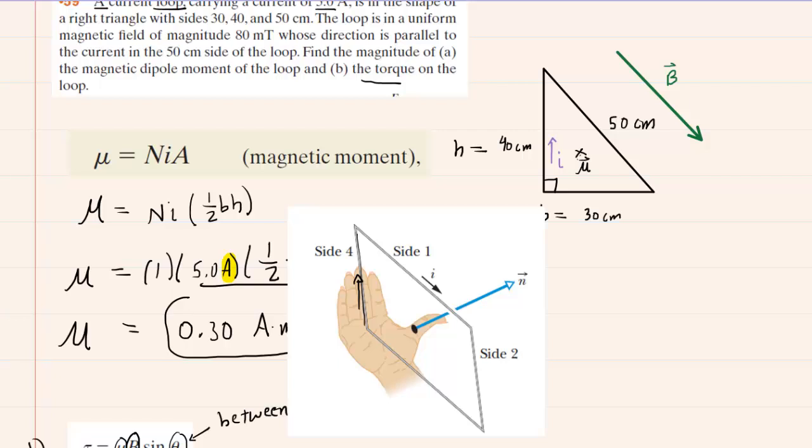The magnetic field direction was given in the question. It says that it was parallel to the current in the 50 centimeter side of the loop. So we've drawn the magnetic field with this green vector parallel to the hypotenuse of our right triangle, that is the 50 centimeter side. Hopefully, after all this, we can see that since the magnetic moment is into the page, and the magnetic field is kind of going in this direction, the angle between them would actually simply be 90 degrees.